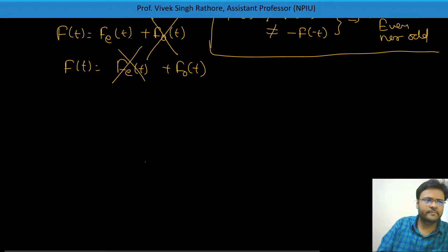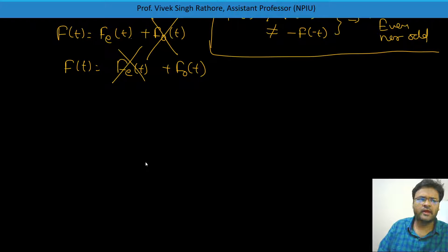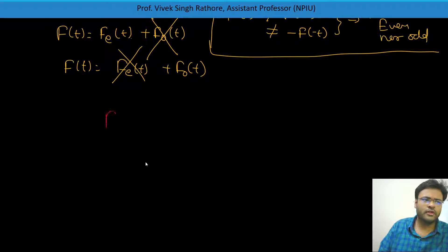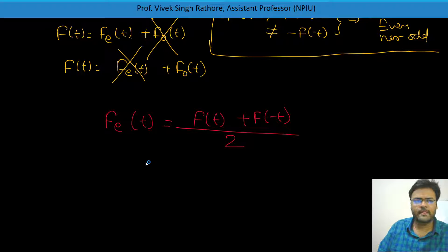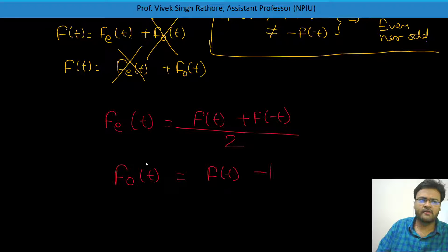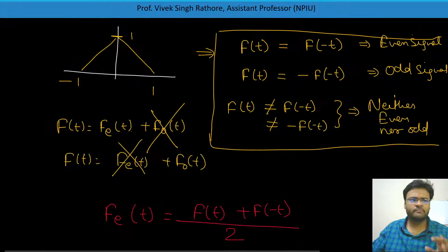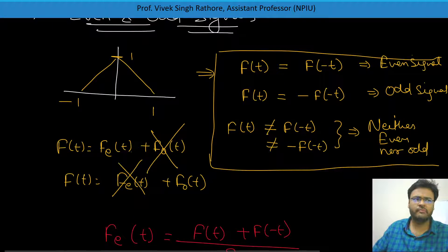If a signal is given to you and you have been asked to calculate its even part and odd part, for the even part of any signal you just need to compute F(t) plus F of minus t, divided by 2. And for the odd part of any signal, you need to do F(t) minus F of minus t, divided by 2.